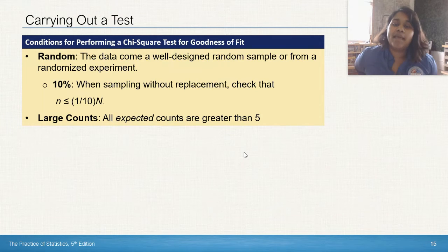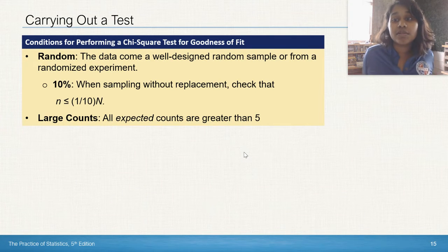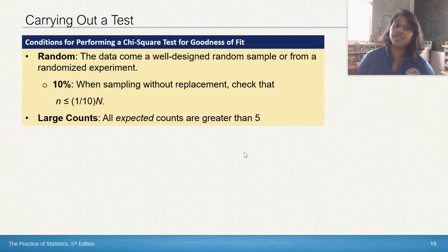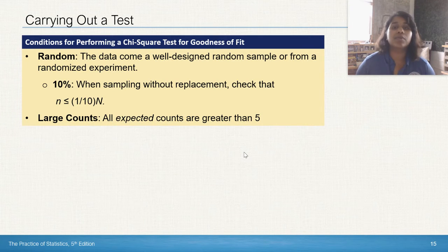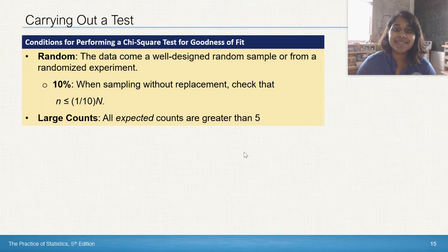So one of the big things in that plan step is our conditions. So here's a little snippet on conditions for carrying out a test for chi-square goodness of fit. Random obviously must be a well-designed random sample or from a randomized experiment itself. 10% is the same when you're sampling without replacement. Make sure that your little n, your sample size is smaller than one-tenth of the population. Our large counts, this is where things change a little bit. All expected counts must be greater than five. That's literally it. You just check that column. Are your expected counts greater than five? Boom, you met your large counts condition.